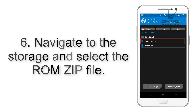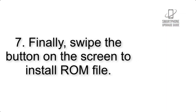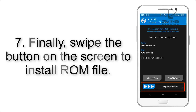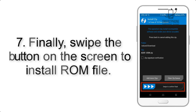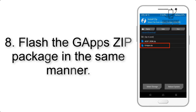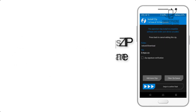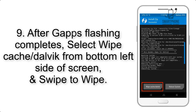Step 6: Navigate to the storage and select the ROM zip file. Step 7: Finally, swipe the button on the screen to install the ROM file. Step 8: Flash the GApps zip package in the same manner.